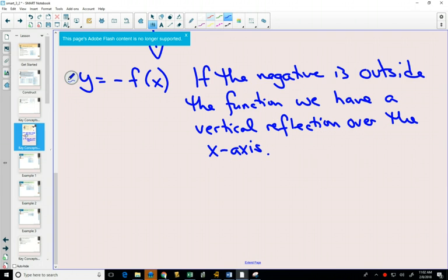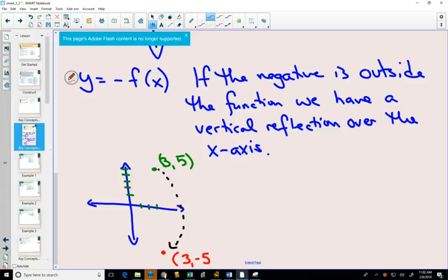And again, we can imagine a single point. Maybe I take the point 3 comma 5, reflecting it over the x-axis, that point, the x value is not going to change. But your y-value is being multiplied by a negative 1. So we have the same idea of inside the function affects our x-values, outside the function affects our y-values.